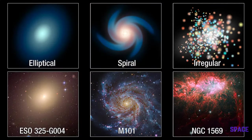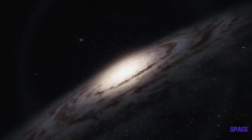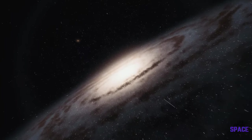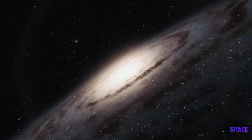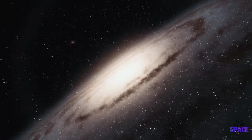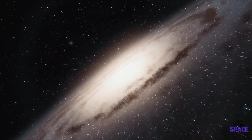There are three main types of galaxies: spirals, ellipticals, and irregulars. First up, we have the spirals. These are the most common type of galaxy, accounting for 77% of all known galaxies in our universe.